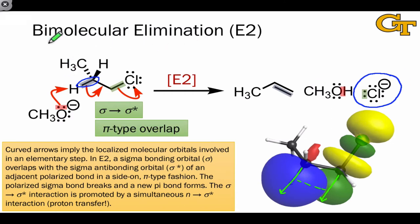But a unique feature of E2 and what makes it bimolecular is the involvement of a Bronsted base in the step as well. Here the methoxide anion is donating a pair of electrons to the sigma star orbital of the bond highlighted blue.